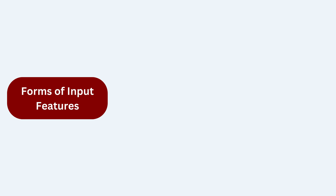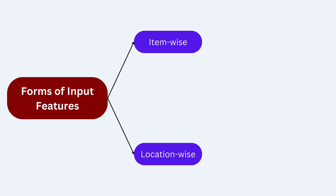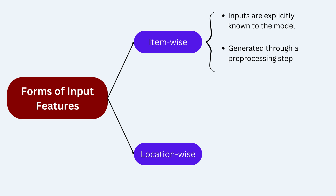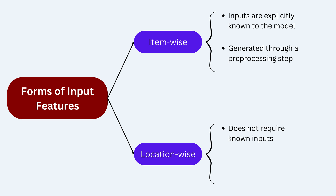Exploring the forms of input features reveals that attention mechanisms can be classified into two categories: item-wise and location-wise. Item-wise attention necessitates inputs that are explicitly known to the model or generated through a pre-processing step. In contrast, location-wise attention does not inherently require known inputs — the model must contend with input items that may be challenging to distinguish. Given the unique characteristics of geospatial data, location-wise attention is frequently employed in geospatial data processing, proving particularly valuable when dealing with inputs that may lack clear distinctions.